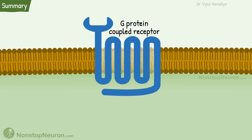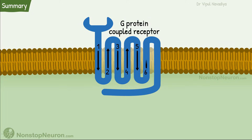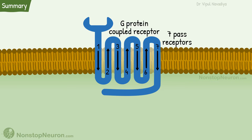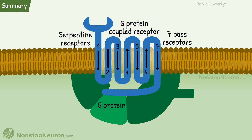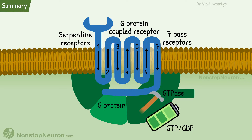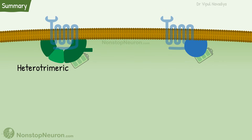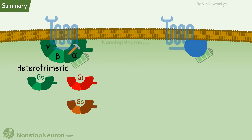Let's have a quick revision. G-protein coupled receptors are transmembrane proteins with 7 transmembrane segments, also called 7-pass receptors or serpentine receptors. As per the name, they are coupled with G-proteins. G-proteins have GTPase activity and bind with GTP or GDP. Heterotrimeric G-proteins have alpha, beta, and gamma subunits, with the alpha subunit having GTPase activity. Different trimeric G-proteins are Gs, Gi, Go, and Gq.